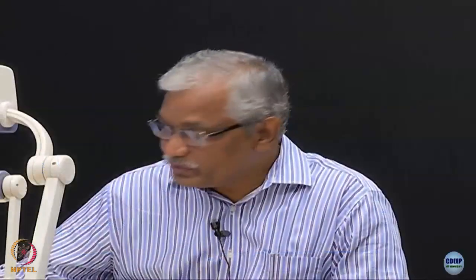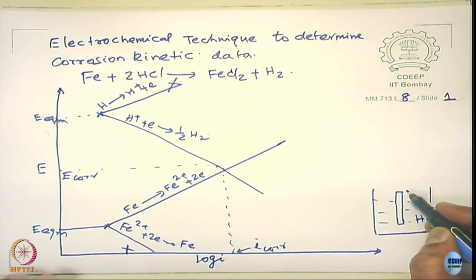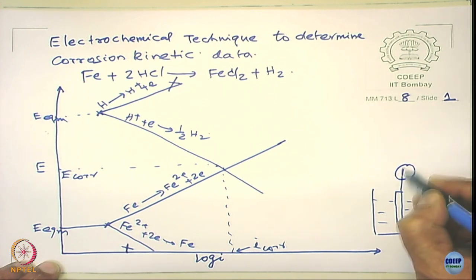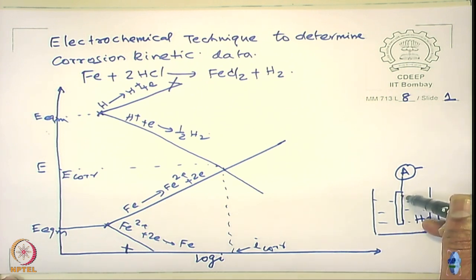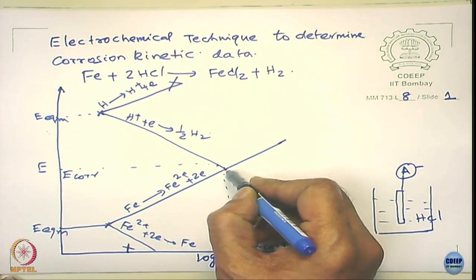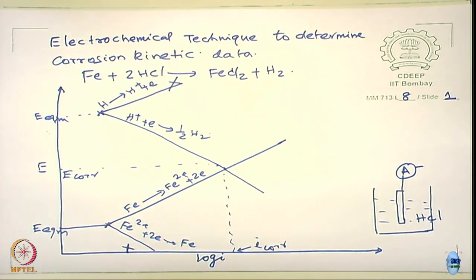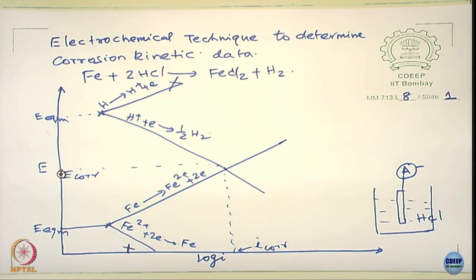I cannot use an ammeter directly. If you use an ammeter, current does not flow out of this corroding system because the rate of oxidation equals the rate of reduction. If I measure using an ammeter, the current will be 0. So at E_corr, the measurable current going out of this system is 0. In this diagram, the corresponding current at E_corr is 0.